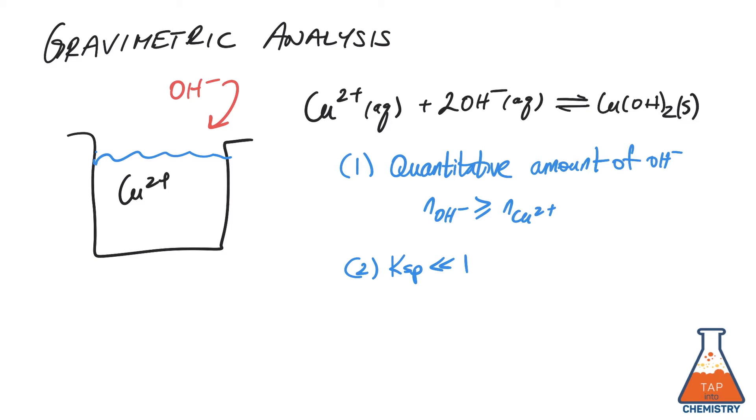And two, that the Ksp for the formation of the product is very, very small, meaning that the K for the reaction as written above is very, very large. In this case, the Ksp is 10 to the minus 20, which means that the formation of copper hydroxide will have a K of 10 to the positive 20, and we can expect that all of the copper ions will precipitate.